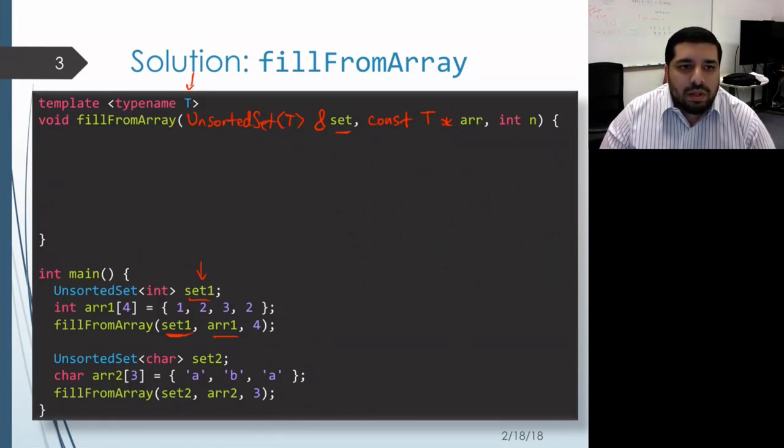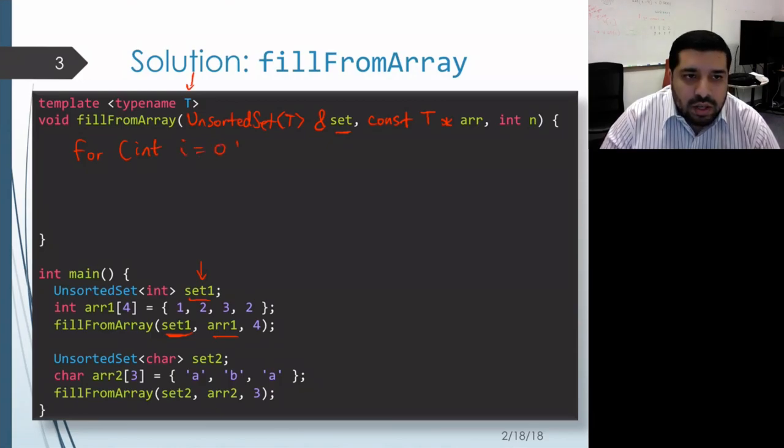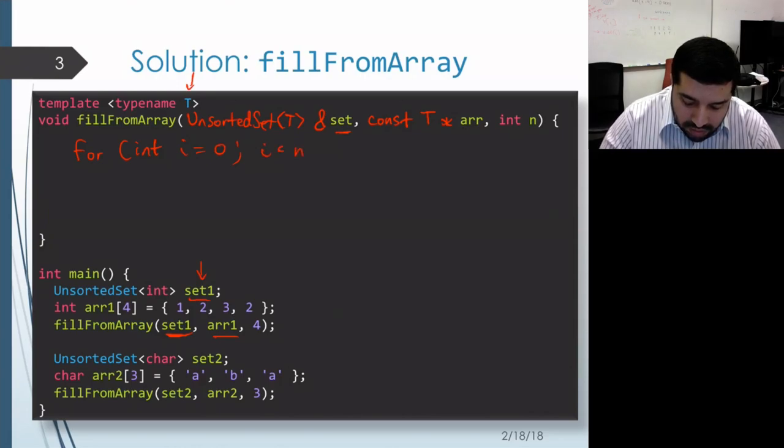Now we can move on to the actual implementation of this function template. What we need to do is iterate over the elements in the array and insert each of them in turn into the set. We'll write a for loop that's going to iterate over our array indices from zero up to n, which is the number of elements in our array.